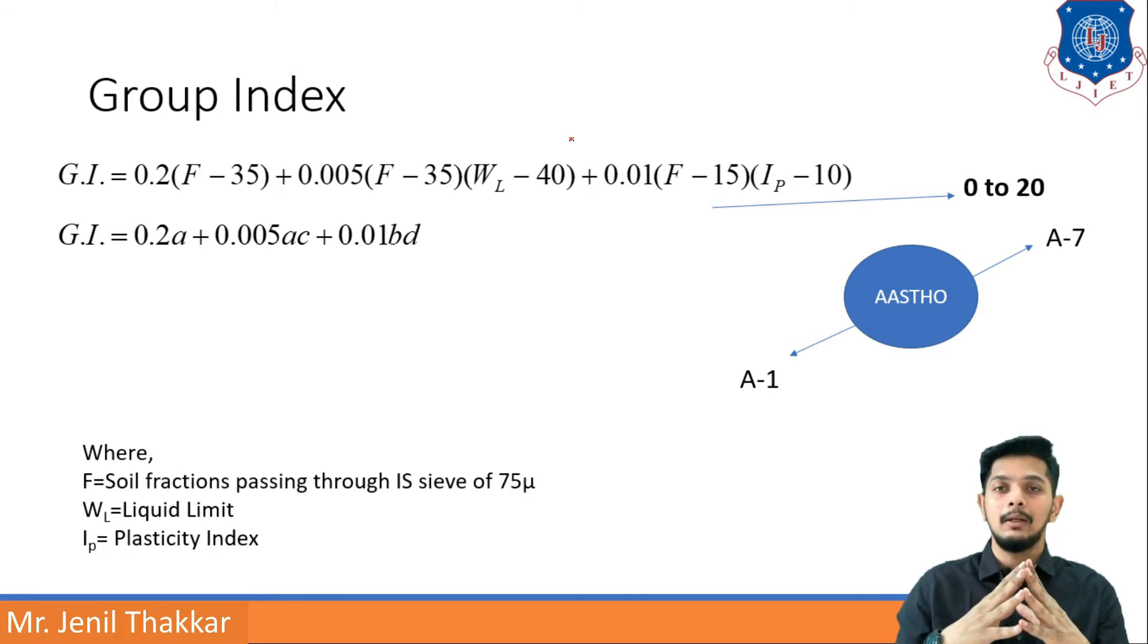American standards are showing A-1 to A-7 different groups. For that grouping we have to find out group index for any soil if it is feasible for making a road on that or we have to work upon that and strengthen it for making a road.